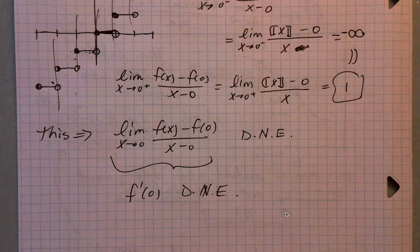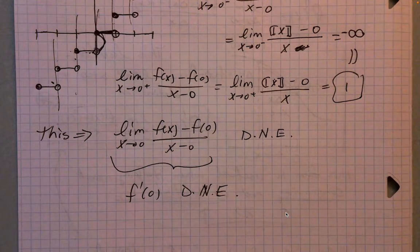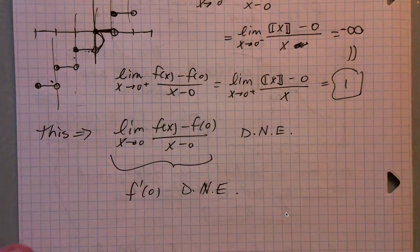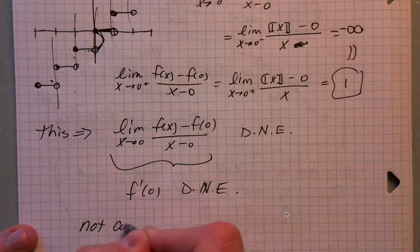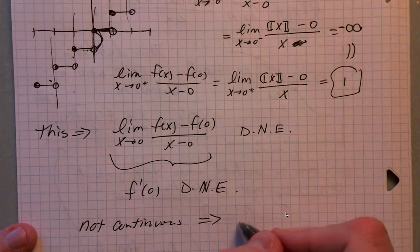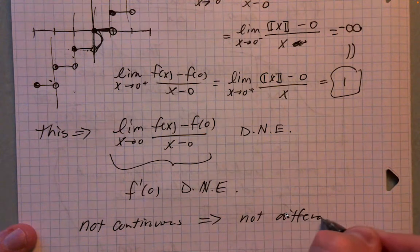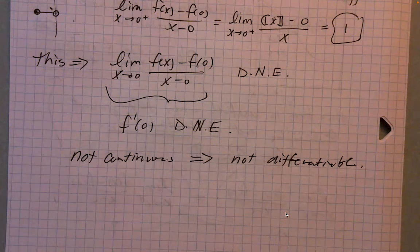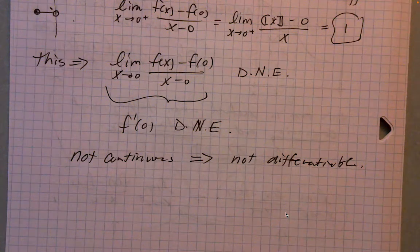The function is not continuous at x equals zero due to the jump discontinuity, and so it is also not differentiable. Not continuous implies not differentiable in this case. However, what we'll see next is that continuity does not imply differentiability — it is possible for a function to be continuous yet not differentiable.